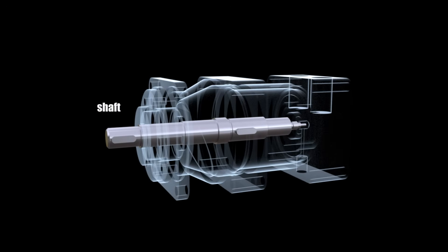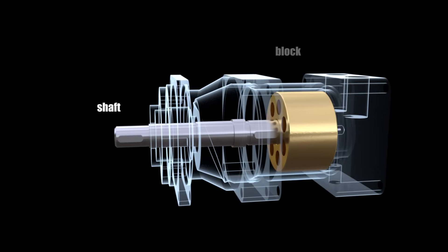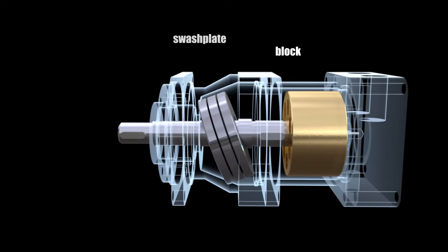The cylinder block of swashplate pumps is installed coaxially with the driveshaft, and the rotation is usually transmitted to the block using a key or spline connection.